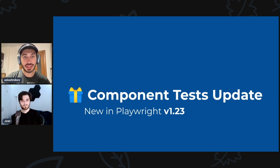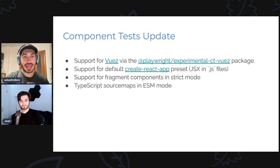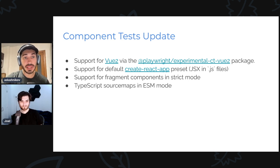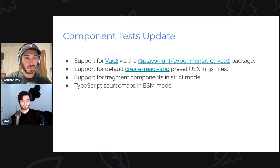Next chapter: component tests update. A few things happened in this release. First and foremost, Vue 2 got support via the new experimental CT Vue 2 package — please give it a try. Next, Create React App by default uses .js files to host their JSX components — it was not supported before, it is supported now. If you had fragment components with multiple top-level elements, this now works out of the box. And finally, if you used ESM mode with TypeScript and were generating source maps, this combination now works.